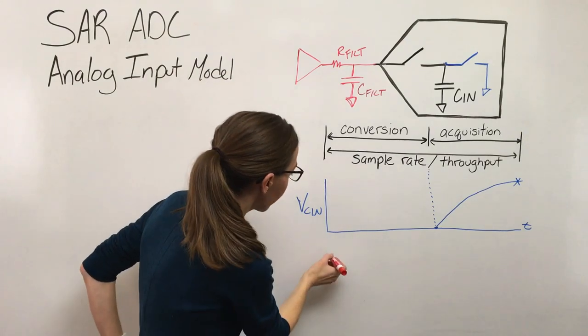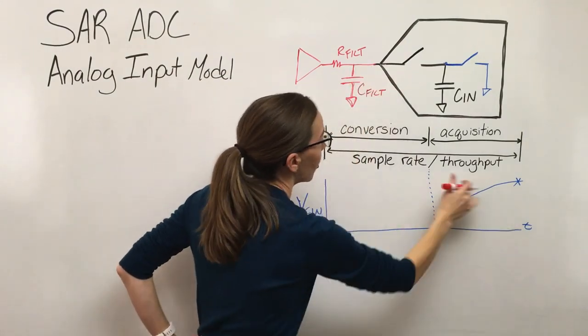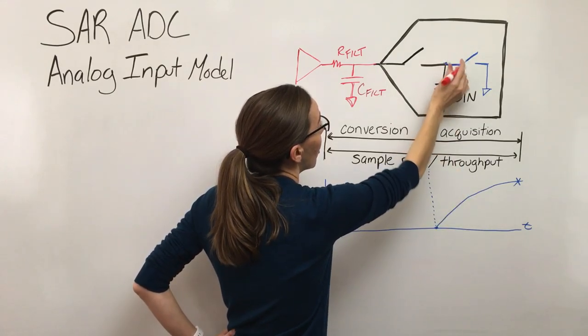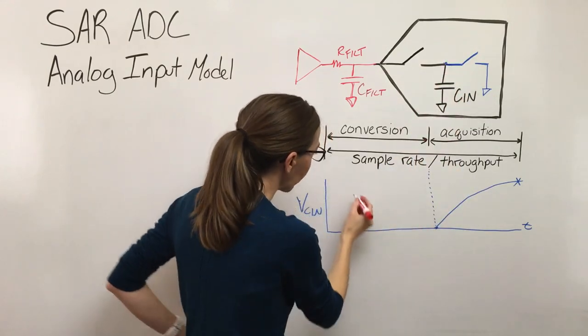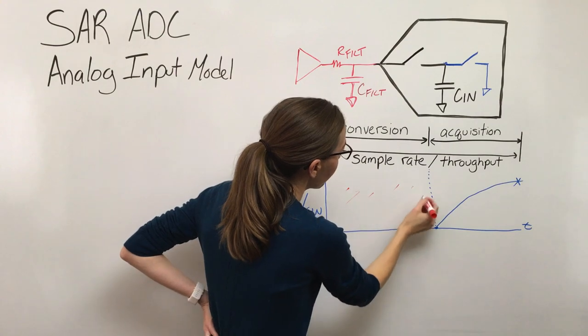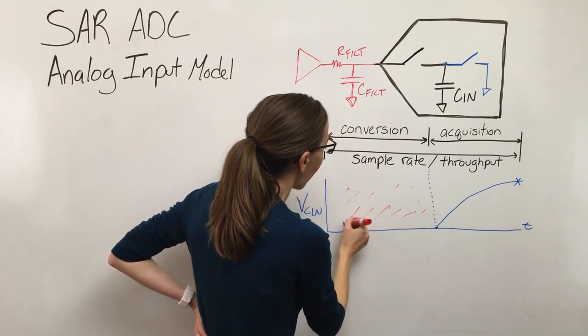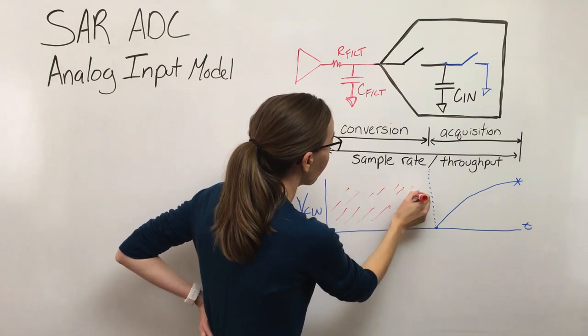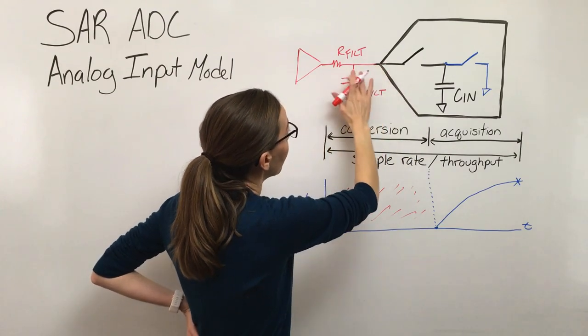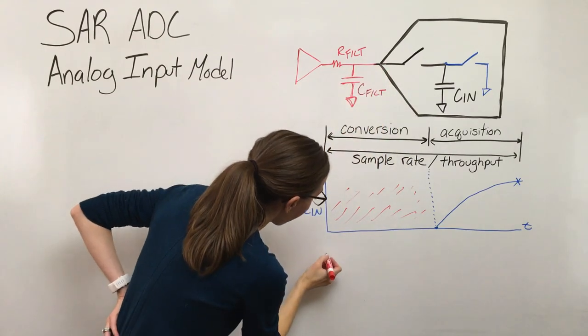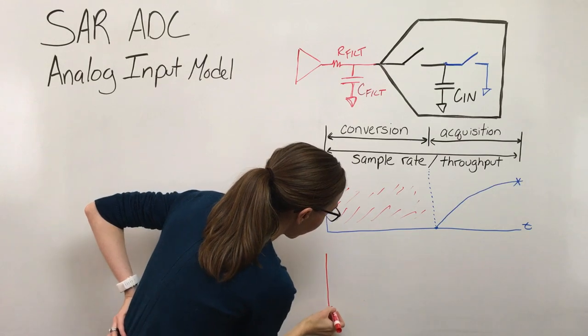that's needed. So we've got this curve right here that tells us what's going on on the sample cap. We don't really care all that much what's going on during conversion—that's not relevant for determining what's going on with this node. But what we do care about